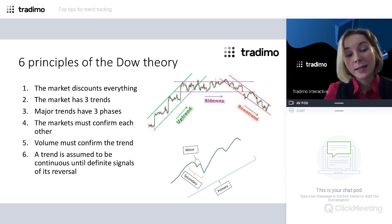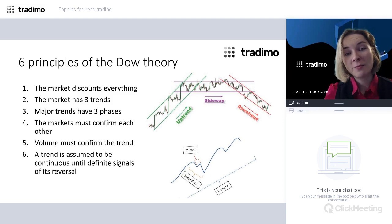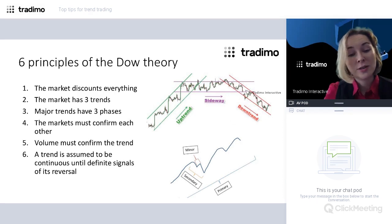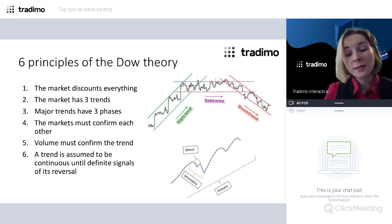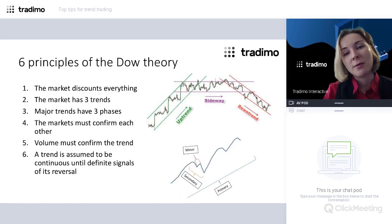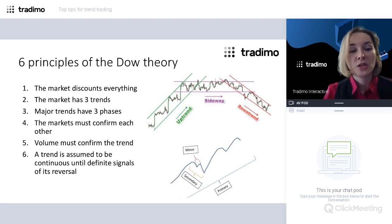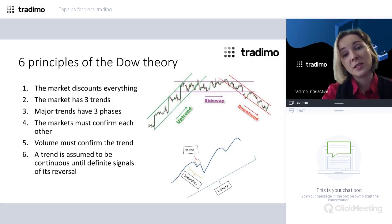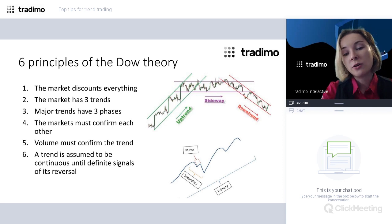More importantly, we should always remember that there are various trends at any moment in time for any financial instrument. There are uptrends, sideways movements, and downtrends — that's classification by direction. But every trend, every market, has big primary trends made up of secondary trends and smaller minor trends. These are like Russian dolls where the bigger thing contains the smaller thing — the fractal structure of the market.